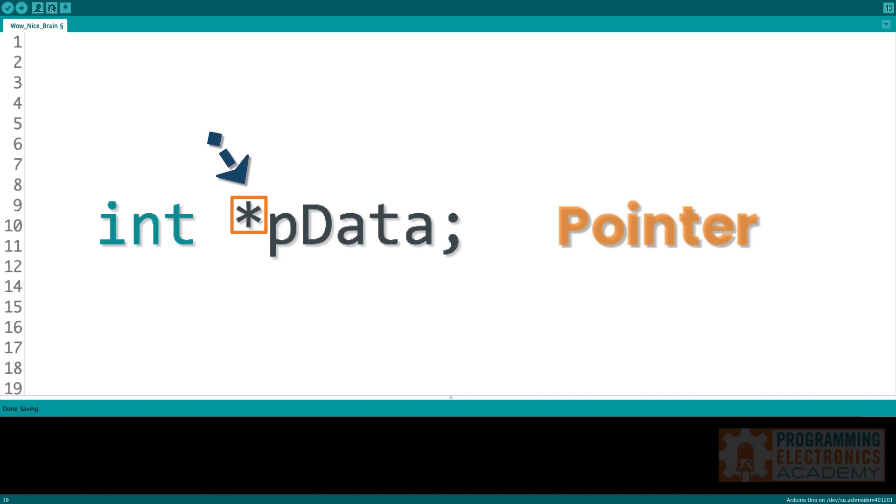And the asterisk tells the Arduino IDE, hey, I'm not just some regular variable, I'm a pointer variable. So anytime you declare a pointer variable, you need to use that asterisk in front of the pointer variable's name.